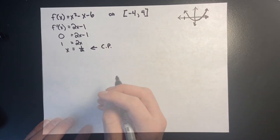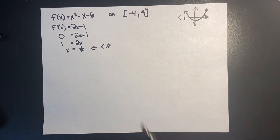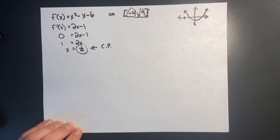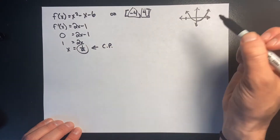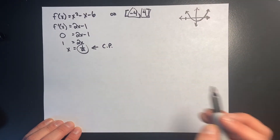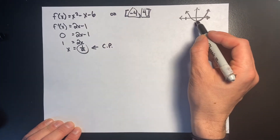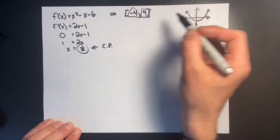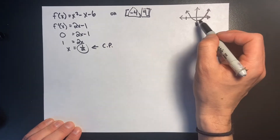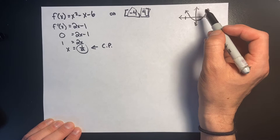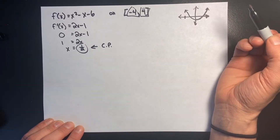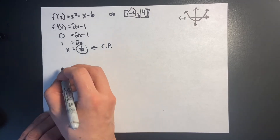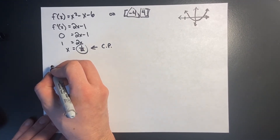Now I take that critical point, my two endpoints, and plug them into the original function. My job is to find the largest and smallest values of the original function — I take the critical point, which gives me a relative maximum or minimum, and I take the endpoints, which could be the absolute ones. From the picture, it looks like the minimum is going to live right at one-half, and probably the absolute maximum is going to live at negative 4.